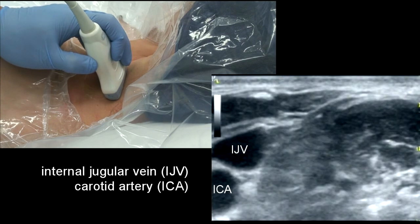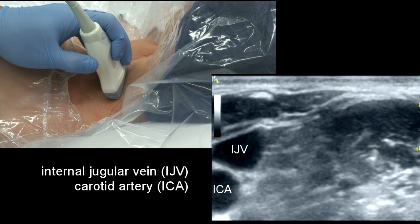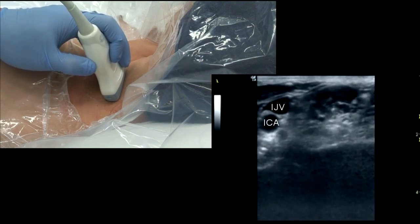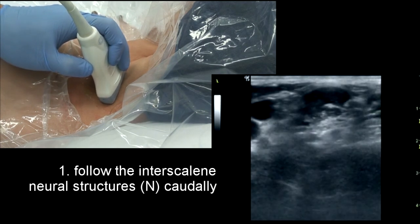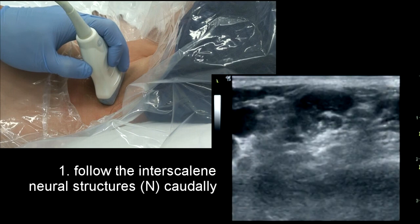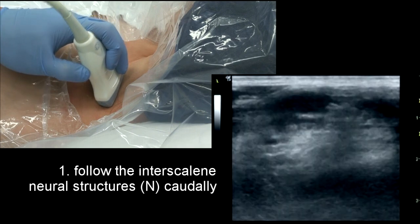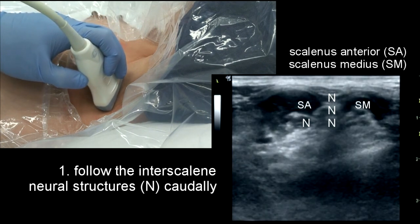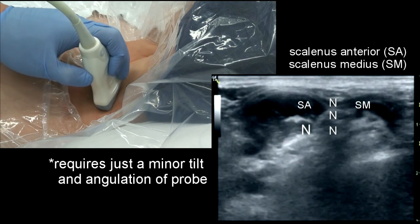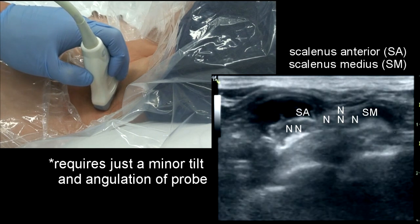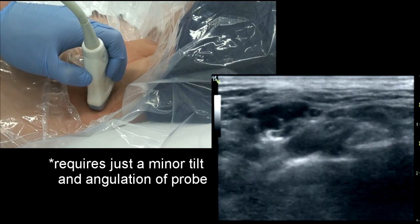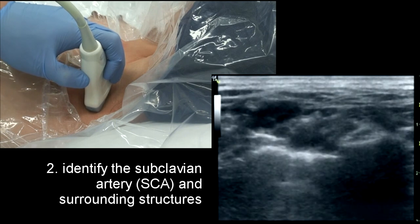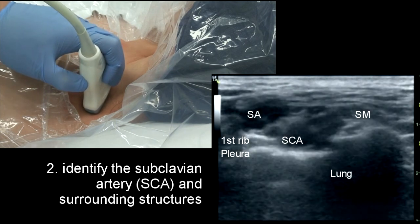As for an interscalene block, first identify the medial anatomy. Once the interscalene brachial trunks are found, follow them caudally. This requires just a subtle movement of the probe. Watch the nerves diverge to form the classic supraclavicular view.